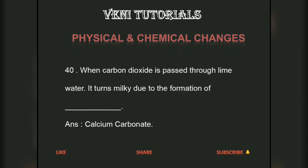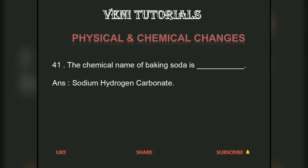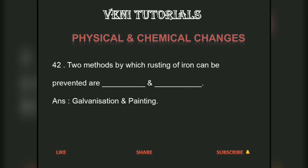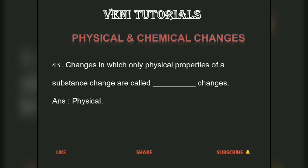When carbon dioxide is passed through lime water, it turns milky due to the formation of calcium carbonate. The chemical name of baking soda is sodium hydrogen carbonate. Two methods by which rusting of iron can be prevented are galvanization and painting.